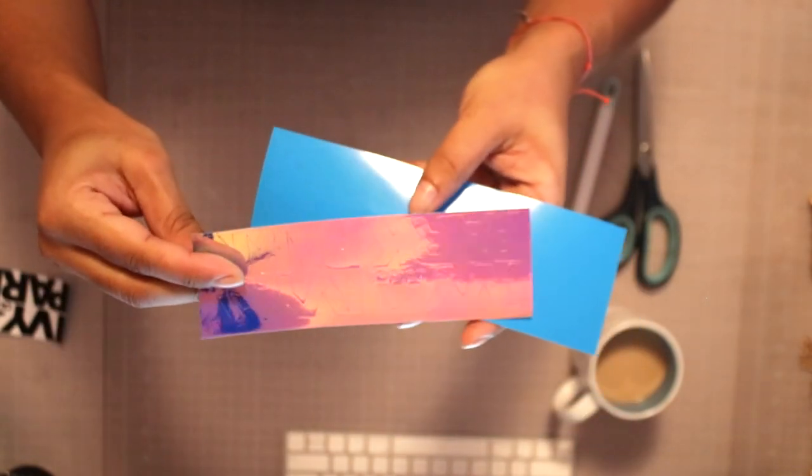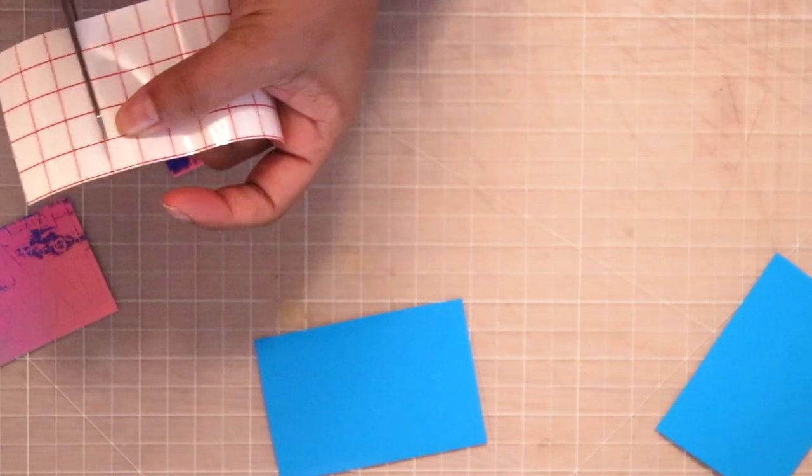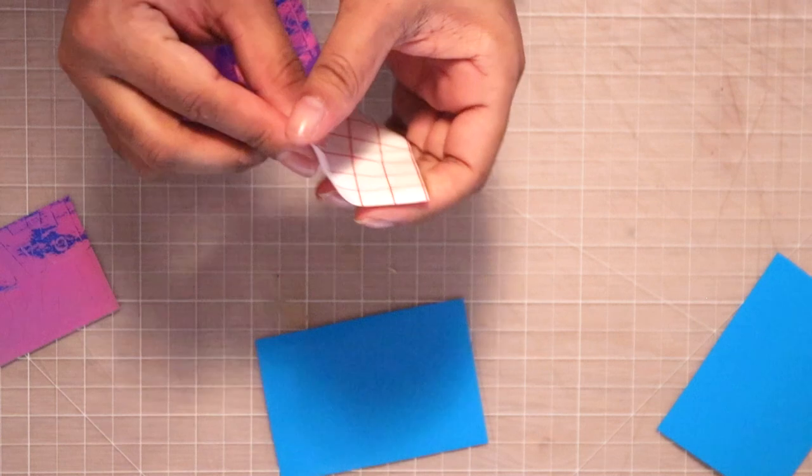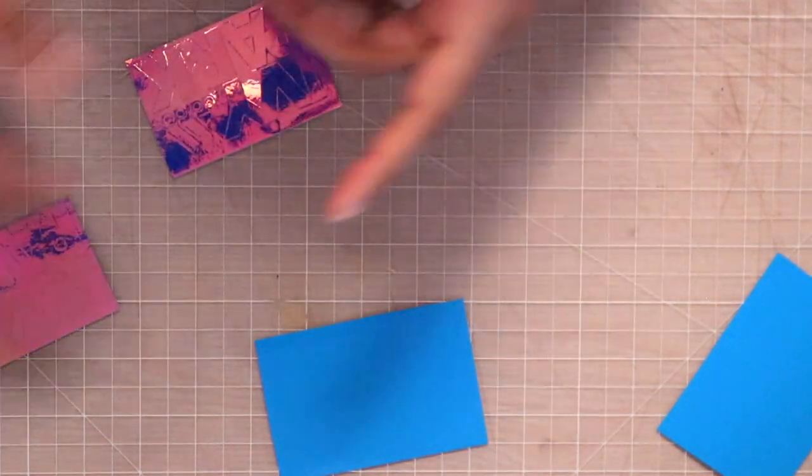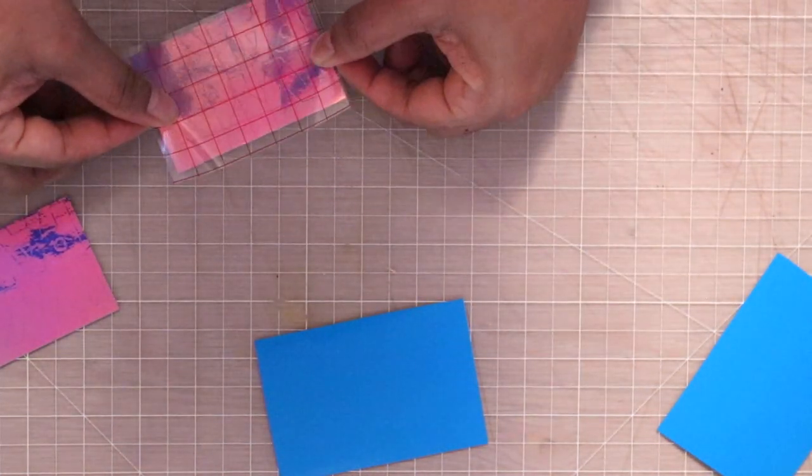The first thing you're going to do is take your transfer paper and put it to the top side of the sticker, and then flip it over.